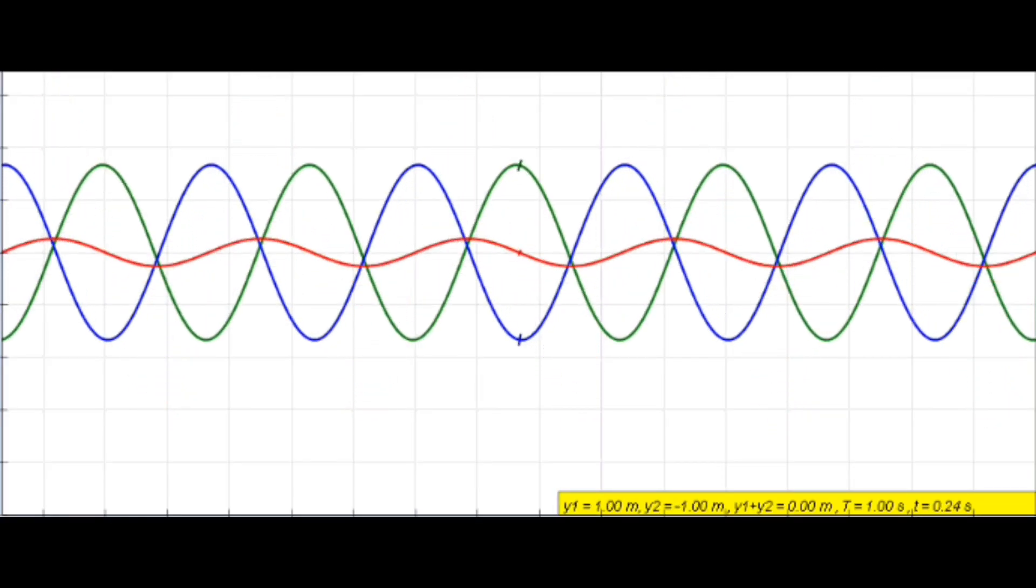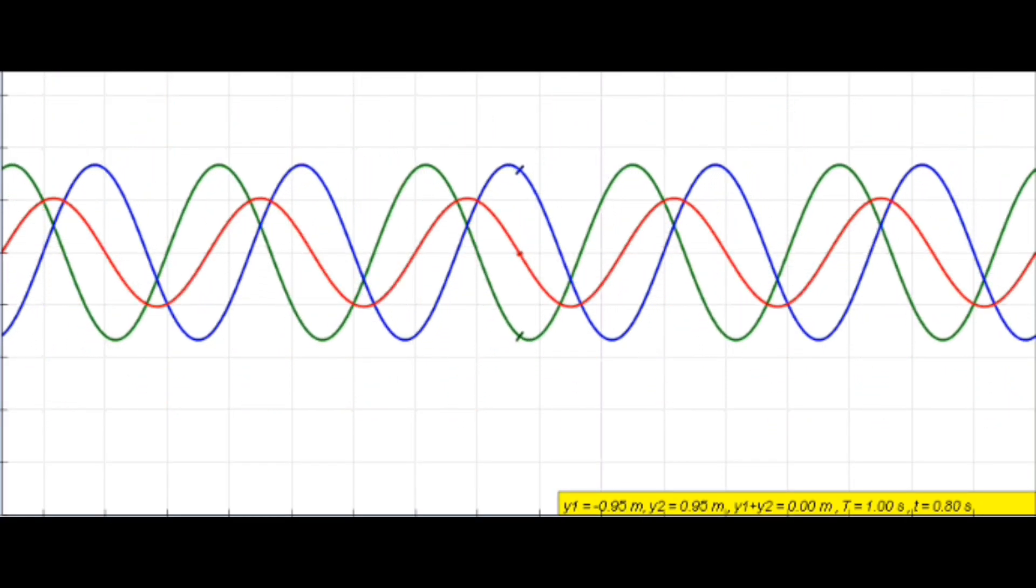These patterns arise due to constructive and destructive interference of the light waves. Constructive interference occurs when the peaks of the waves align, reinforcing each other and creating bright regions on the screen.